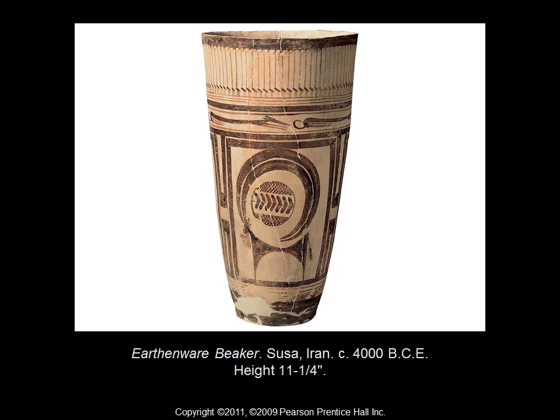We will next be looking at the Neolithic period, also known as the New Stone Age, from approximately 10,000 BCE to about 3,000 BCE. The Neolithic period signifies the transition of nomadic peoples from hunter-gatherers to farmers and herders. This earthenware beaker from Susa, from around 4,000 BCE, illustrates the transition from naturalistic imagery to abstract imagery. The elongated animals on top are abstracted images of dogs, and in the center is an abstraction of an ibex. The painted imagery on pottery such as this later influenced the ancient Greeks.